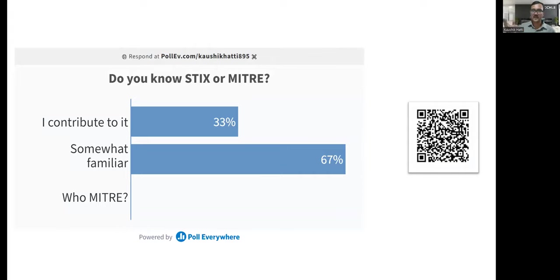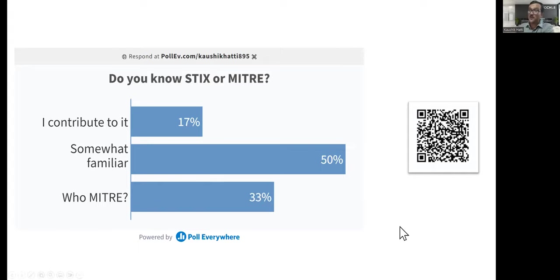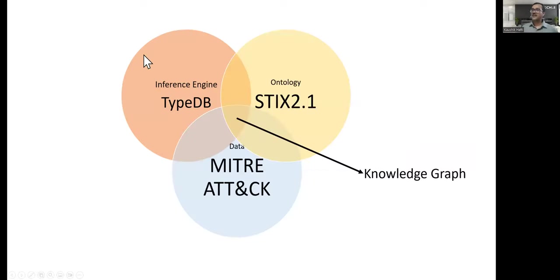Are you familiar with STIX or MITRE? If you are an expert you're probably contributing to it; if somewhat familiar, you're here; if you have no clue, you might ask 'who is MITRE?' In the interest of time I'll take it along with all of us. For the demo: for ontology I'm using STIX, for the inference engine I'm using TypeDB, and for data it's from MITRE ATT&CK. I'll explain each in a moment.